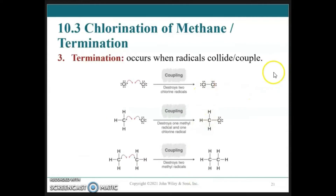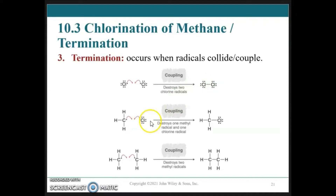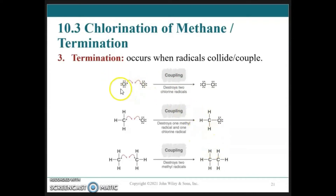Termination happens when radicals couple, and that can happen in several ways: two chlorine radicals can combine to form chlorine gas; methyl radicals can combine with chlorine to form chloromethane; or two methyl radicals can combine to form ethane. In all these cases, the number of radical species on the left is two and on the right is zero — a net decrease — making these termination steps.